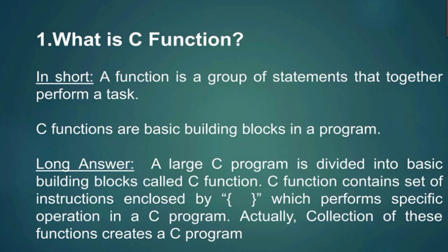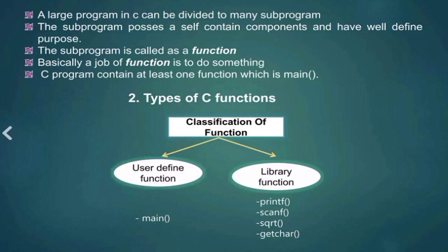A large C program is divided into basic building blocks called C function. It contains set of instructions that are enclosed by curly braces which performs specific operations in a C program. The collection of these functions creates a C program.